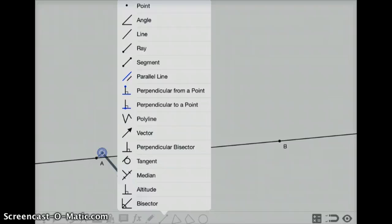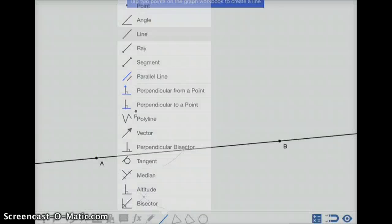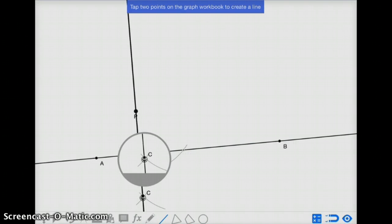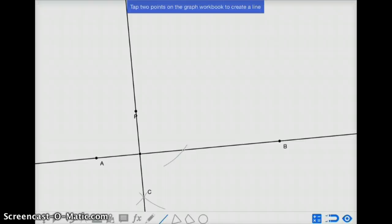Create a line that passes through P, and that new arc intersection point, and we'll call it C. Line PC is going to be perpendicular to AB.